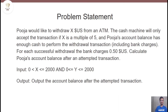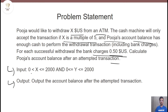The problem statement is: Pooja would like to withdraw X USD from an ATM. The cash machine will only accept the transaction if X is a multiple of 5, and Pooja's account balance has enough cash to perform the withdrawal transaction. For each successful withdrawal, the bank charges 0.50 US dollars. Calculate Pooja's account balance after an attempted transaction. The value of X lies between 0 and 2000 (exclusive of 0), and Y lies between 0 and 2000 (inclusive of 0). Output the account balance after the attempted transaction.